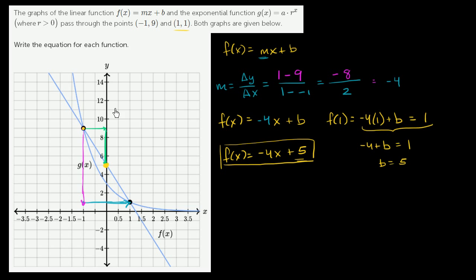Now let's figure out the exponential function. We could just use the two points to figure out these two unknowns. g(-1), which would be a times r to the -1, they tell us that g(-1) is equal to 9. So a times r^(-1), that's the same thing as a over r is equal to 9. We could multiply both sides by r and we get a = 9r.